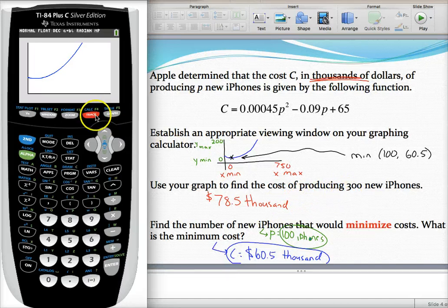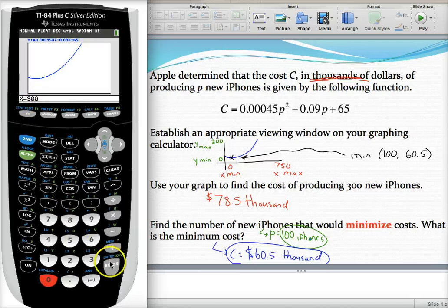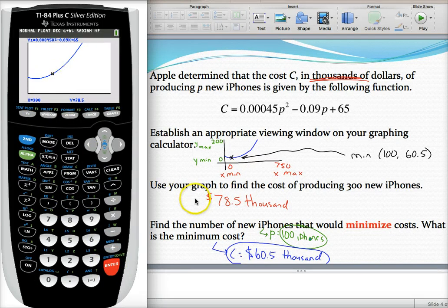One way I could do this is hit trace. Then I could try to move my cursor to when X is 300, but I probably won't get there exactly. The cool thing is once you hit trace, just type in the X value you want. We want to make 300 phones. So when I hit enter,